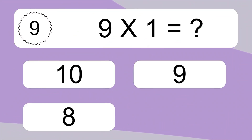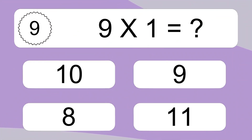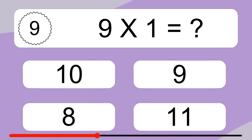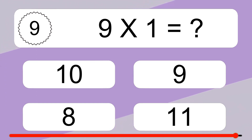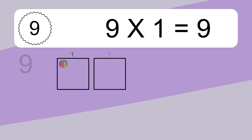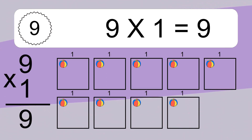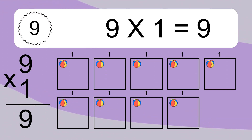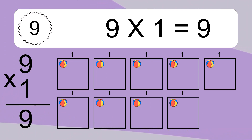9 times 1 equals what? 9 times 1 equals 9. We have 9 boxes and each box has 1 colorful ball inside. If you count all the balls in all the boxes together, you will have 9 times 1 balls. This equals 9 balls.